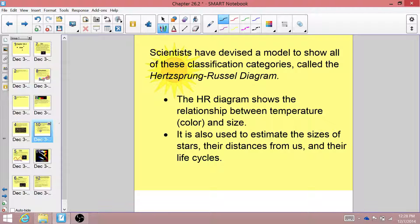Now that we have all this information about size, and color, and chemical composition, and brightness of all the stars, scientists came up with a model to kind of categorize all of these things. And this model is called the Hertzsprung-Russell diagram, or the HR diagram.